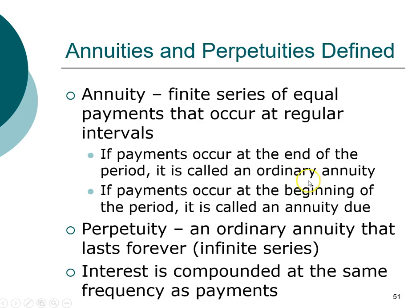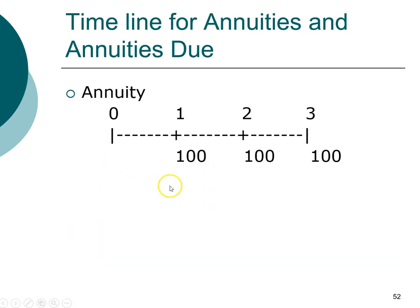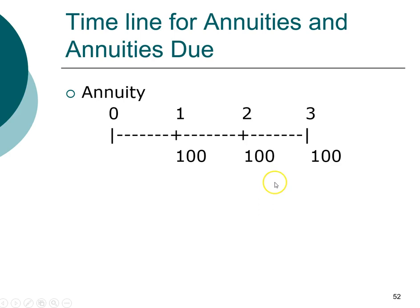Here's a picture on a timeline of what an ordinary annuity looks like. Remember that for an ordinary annuity, cash flows occur at the end of each period — you receive $100 at the end of year one, $100 at the end of year two, and $100 at the end of year three. It's important to get used to representing annuities on a timeline so you know how to solve problems appropriately.